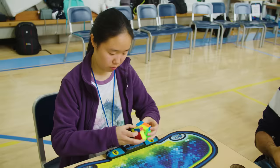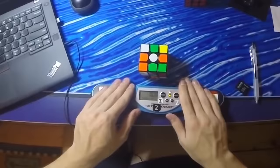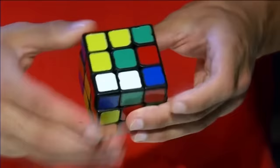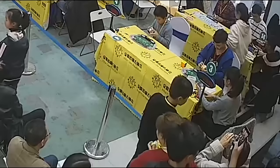They're called speedcubers, and the best of them can whip a Rubik's Cube into shape in well under 10 seconds. As if that weren't impressive enough, the single fastest solve ever recorded in competition is a ludicrous 3.47 seconds.